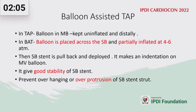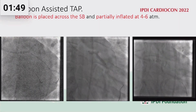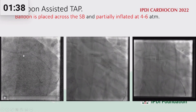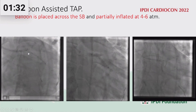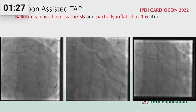IVUS has a good role in all cases of bifurcation stenting. What is balloon-assisted TAP? Sometimes when we put the side branch stent, it is difficult due to patient movement and instability of the catheter — stability of the side branch stent is very difficult to maintain. In these circumstances, balloon-assisted TAP is a very good technique, where the balloon in the main branch is inflated at four to six atmospheres and pulling back of the side branch stent is done.